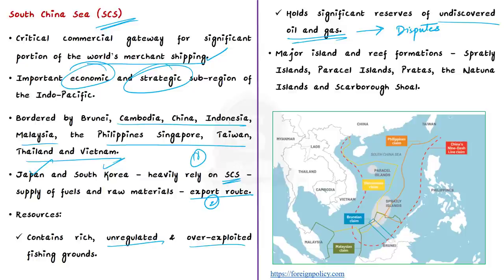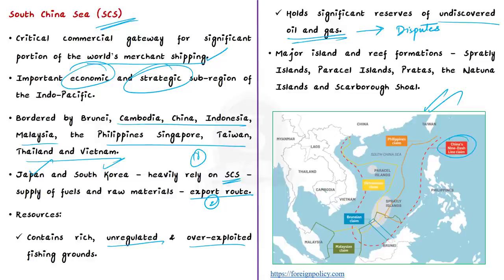Looking at the map, you can understand the claims made by different stakeholders regarding these islands and reefs. Among these claims exists China's nine-dash line — a demarcation line used by China to delineate its territorial claims in the South China Sea. Because of this line, there are many contested areas between China and other nations, including disputes over the Paracel Islands, Spratly Islands, Prattas Islands, Maclis Field Bank, and Scarborough Shoal.